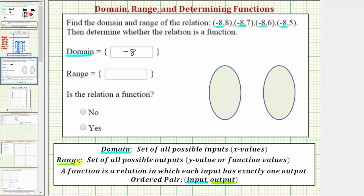And because the range is a set of all possible outputs, which again is the second value of each ordered pair, the range for the given relation will be the set containing all of the second values of the ordered pairs. So the range is the set containing eight, seven, six, and five.